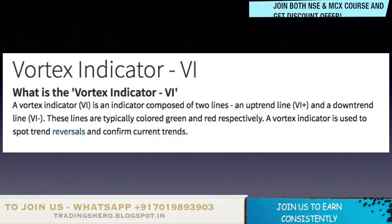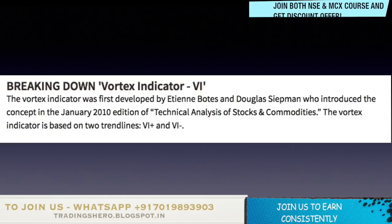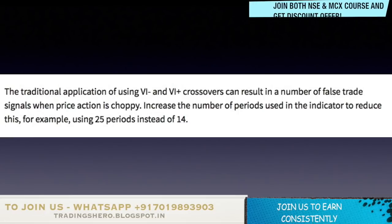Let's break down the vortex indicator further. It was first developed by Etienne Botes and Douglas Siepman, who introduced the concept in January 2010 — a very latest indicator compared to RSI and others invented much earlier. It was introduced in the 2010 edition of Technical Analysis of Stocks and Commodities. The vortex indicator is based on two trend lines: VI plus and VI minus.